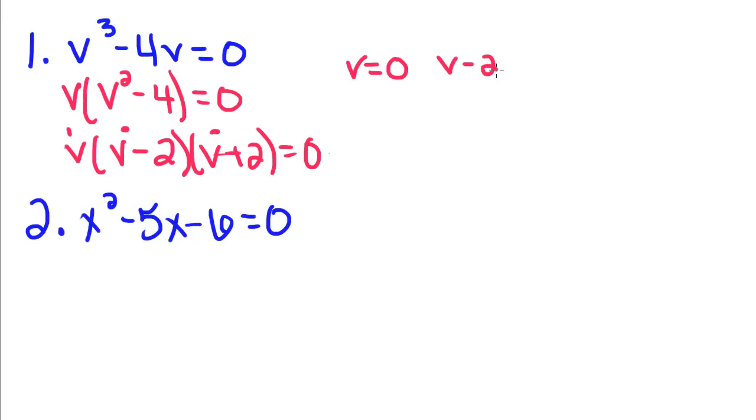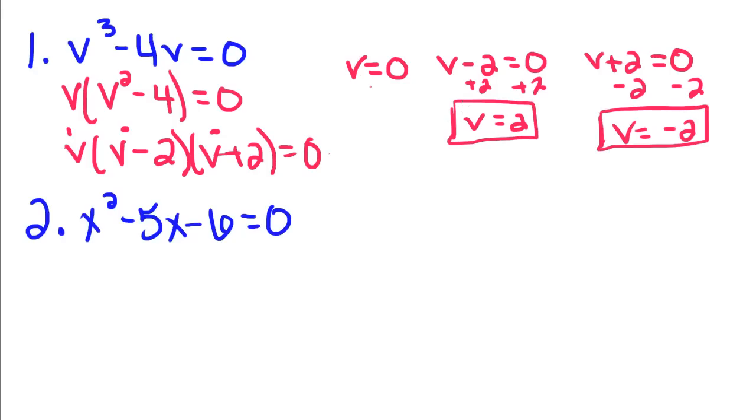V equals zero, V minus 2 equals zero, V plus 2 equals zero. That's already solved for you. If we add 2 to both sides, we get V is equal to 2. Subtract 2 from both sides and we get V is equal to negative 2. Most of the time you are going to have more than one solution to your problem.